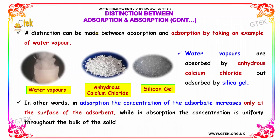A distinction can be made between adsorption and absorption by taking an example of water vapor. Water vapors are absorbed by anhydrous calcium chloride but adsorbed by silica gel. In other words, in adsorption, the concentration of the adsorbate increases only at the surface of the adsorbent, while in absorption, the concentration is uniform throughout the bulk of the solid.